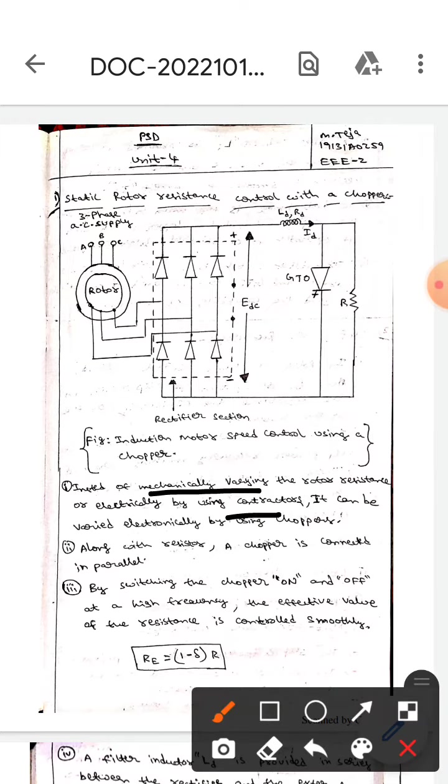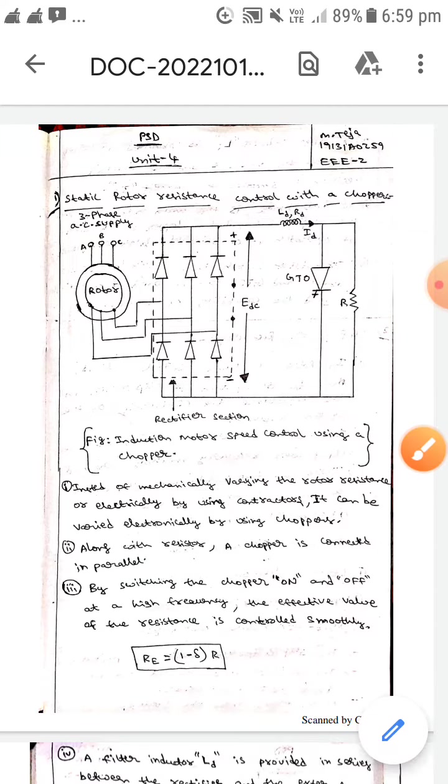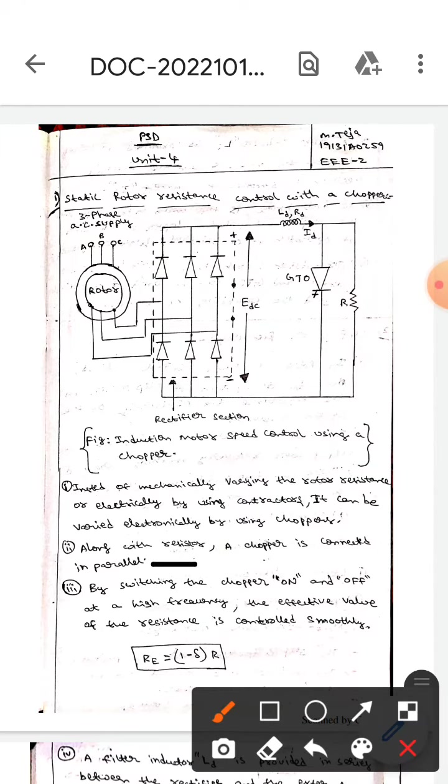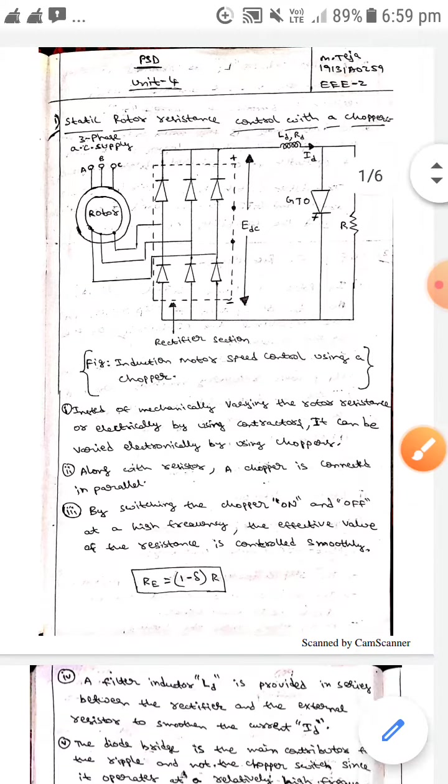Along with the resistor, a chopper is connected in parallel. If you observe here, along with the resistance, a chopper is connected in parallel. By switching the chopper on and off at high frequency, the effective value of this resistance is controlled smoothly.